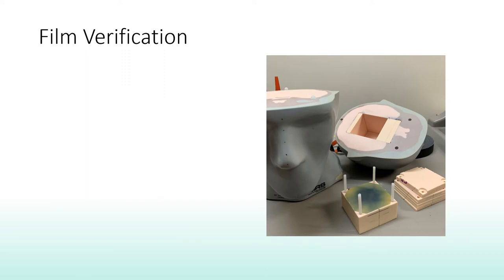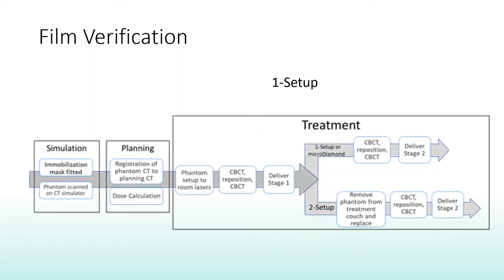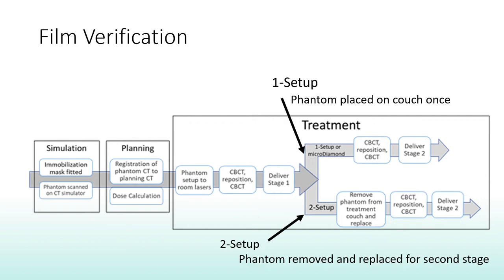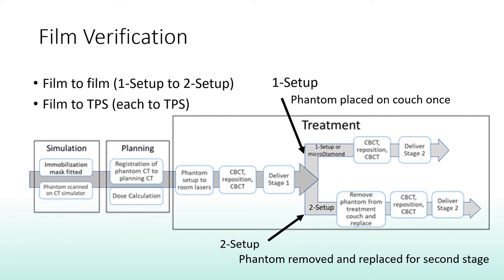Radiochromic film was used in two ways: to verify the treatment plan dose, and to assess the positional errors that could arise from setting up a patient twice for the second stage. This was done by exposing one film to both stages after one combined setup, and another film was set up twice by removing the phantom from the couch and starting the setup process again for the second stage. We did film comparison and gamma analysis for film-to-film and for each film to treatment planning dose.